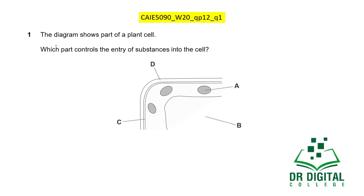In this question, the diagram shows part of a plant cell. Which part controls the entry of substances into the cell? D is the cell wall — it is fully permeable, so it will not be controlling entry. C is the cell membrane, which controls the entry and exit of materials into the cytoplasm. So the answer should be C. A is the chloroplast and B is the vacuole — neither of these controls entry and exit of materials into the cell.